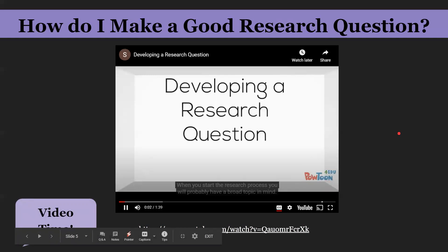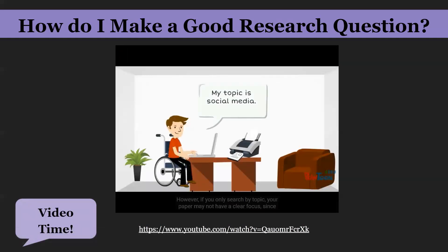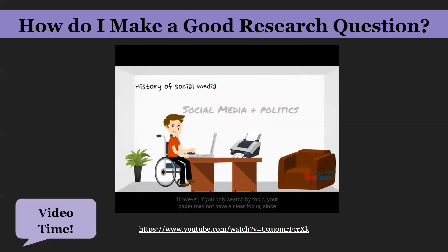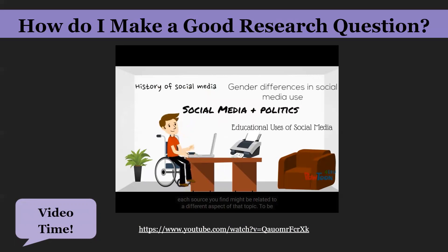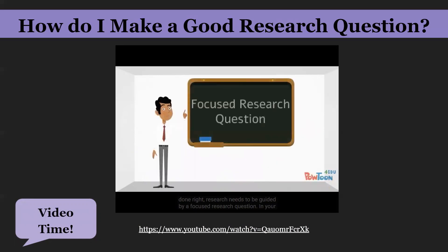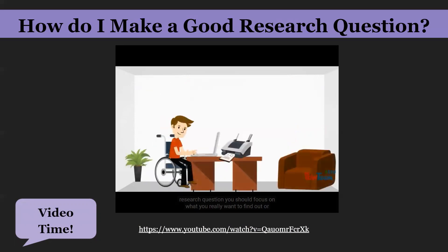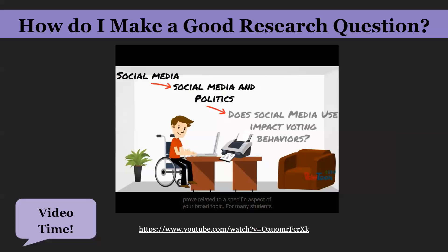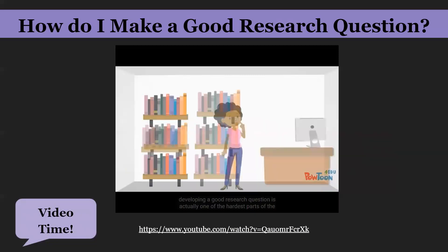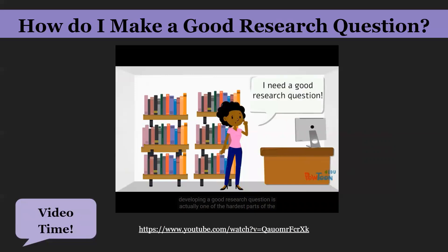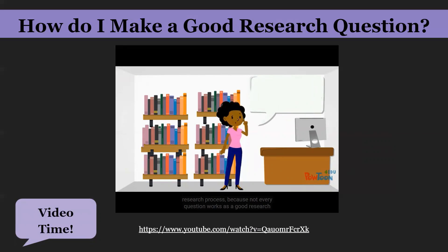When you start the research process you will probably have a broad topic in mind. However, if you only search by topic, your paper may not have a clear focus since each source might relate to a different aspect of that topic. Research needs to be guided by a focused research question. In your research question, focus on what you really want to find out or prove related to a specific aspect of your broad topic. For many students, developing a good research question is actually one of the hardest parts of the research process because not every question works as a good research question.